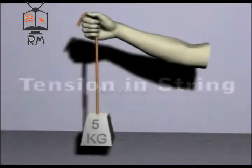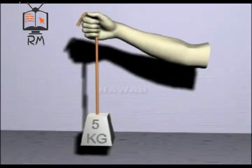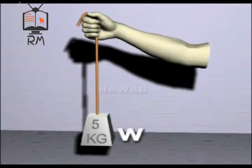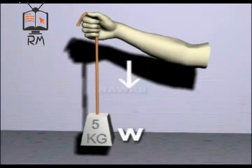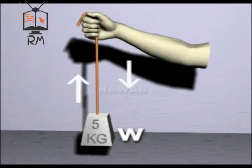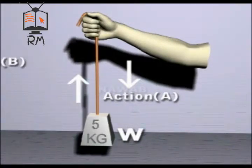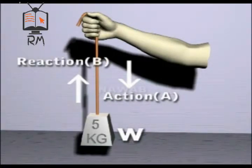Tension in a string. Suppose a person is holding an object of weight W with the help of a string. The object exerts a force on the hand through the string in the downward direction, while the hand exerts an equal force on the object in the upward direction through the string. Hence, the force on the hand is action and the force exerted on the object is the reaction. The magnitude of force remains uniform everywhere in the string.